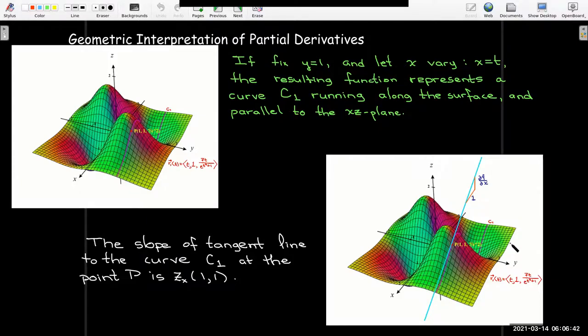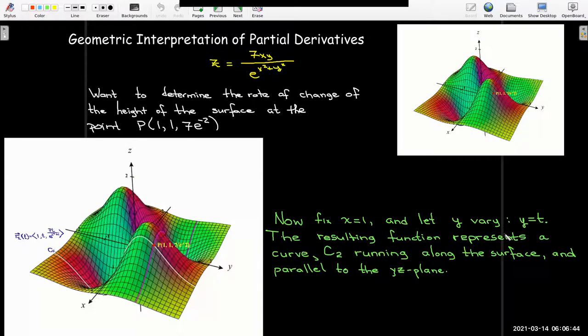We can do a similar thing for the partial derivative with respect to y. So now we're going to have x is going to be the fixed value, x equals 1, and y is going to vary. We're going to get a different curve, this white curve, it also runs along the surface.